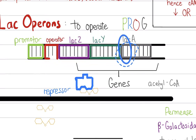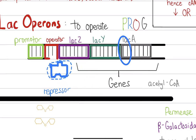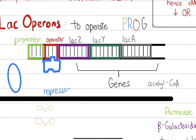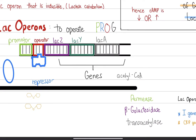Once the genes are transcribed, translation can happen, producing the enzymes responsible for breaking down lactose. Once the lactose is gone, the repressor finds its way back to the operator and sticks there again, blocking the polymerase. The presence of lactose is essentially enabling the entire process.